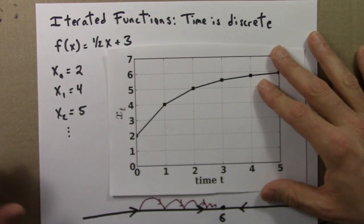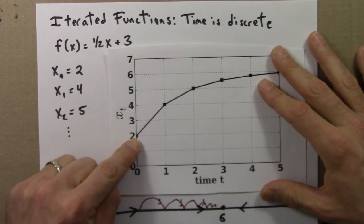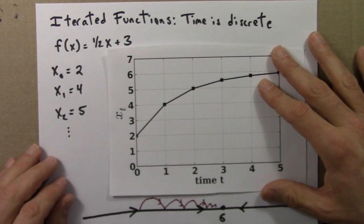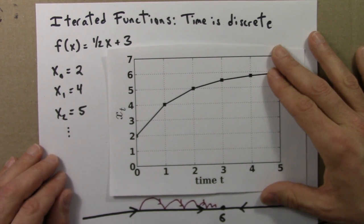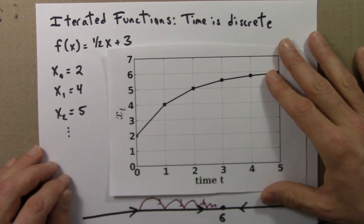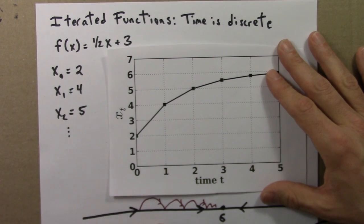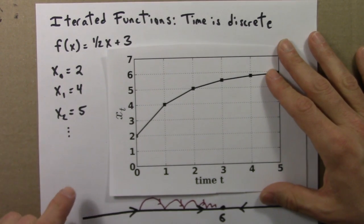Differential equations, which are the main topic of this unit, are different in that they analyze a situation where a variable changes continuously. For example, the temperature of a cup of coffee — if the temperature starts at 40 degrees and a little while later is 30 degrees, we can be sure it didn't just instantly jump from 40 to 30, but must have passed through all temperatures between 40 and 30. So differential equations describe continuously changing phenomena, while iterated functions describe phenomena that change in jumps.